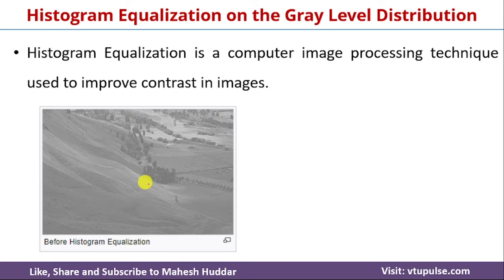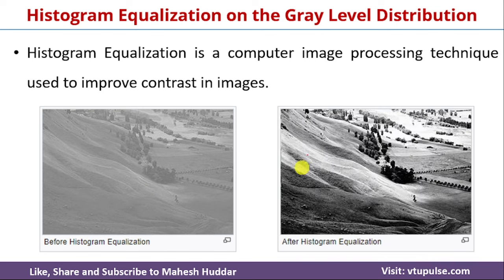Let us say that the original image looks like this — that is before histogram equalization. After performing the histogram equalization, the image looks something like this. This image has more contrast compared to the original image. So this is what is called histogram equalization.